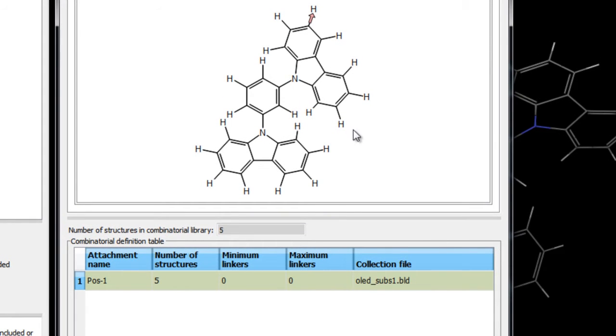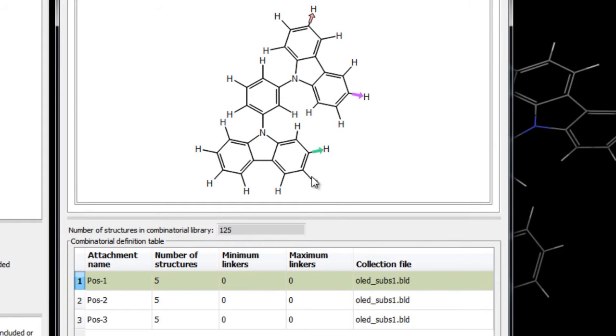As we choose more attachment positions, notice how the number of structures in the combinatorial library increases. Here we'll just choose seven sites, which corresponds to five fragments to the power of seven sites, equating to roughly 78,000 individual structures.